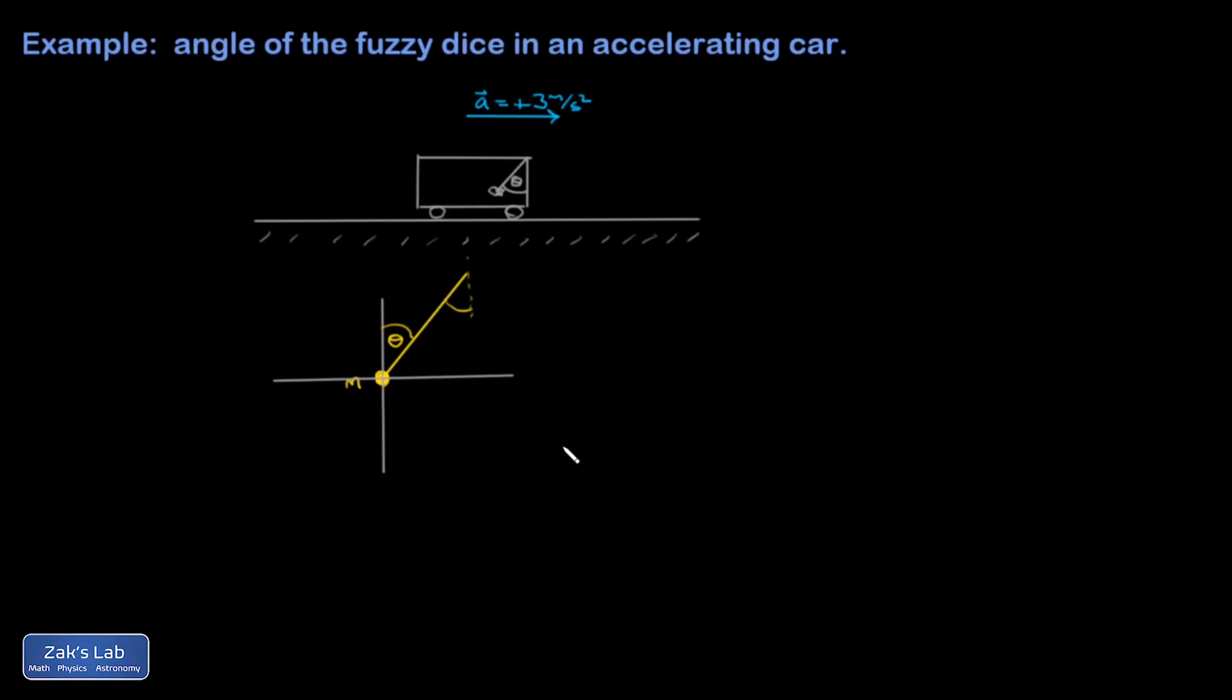So then I have to think of every possible force that's acting on this mass. Gravity is always there unless we're in deep space. So I have the weight vector whose magnitude is mg.